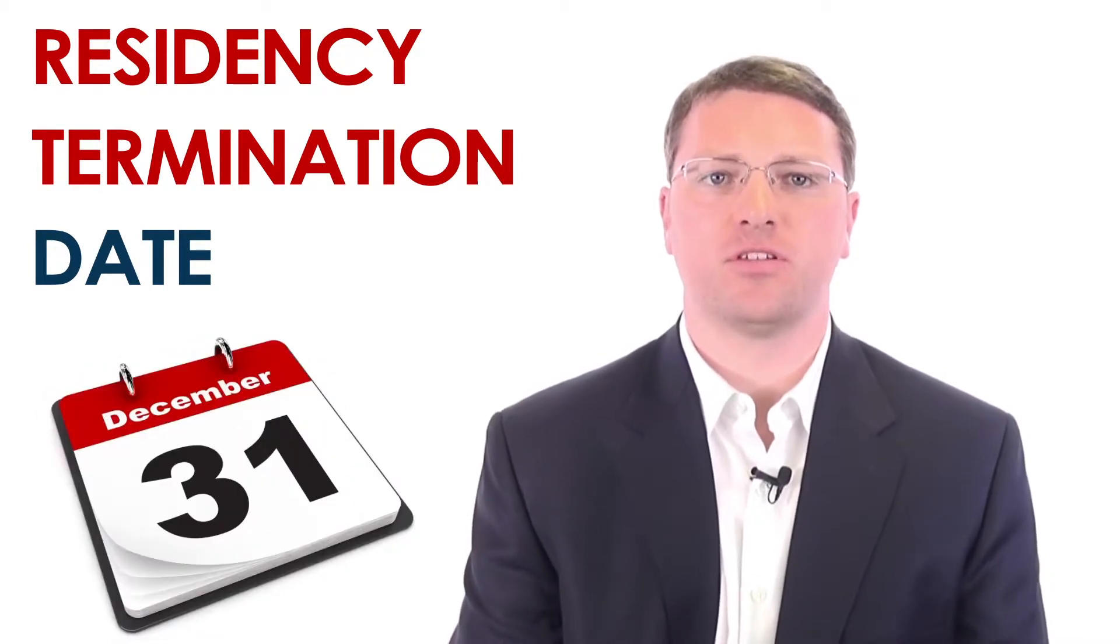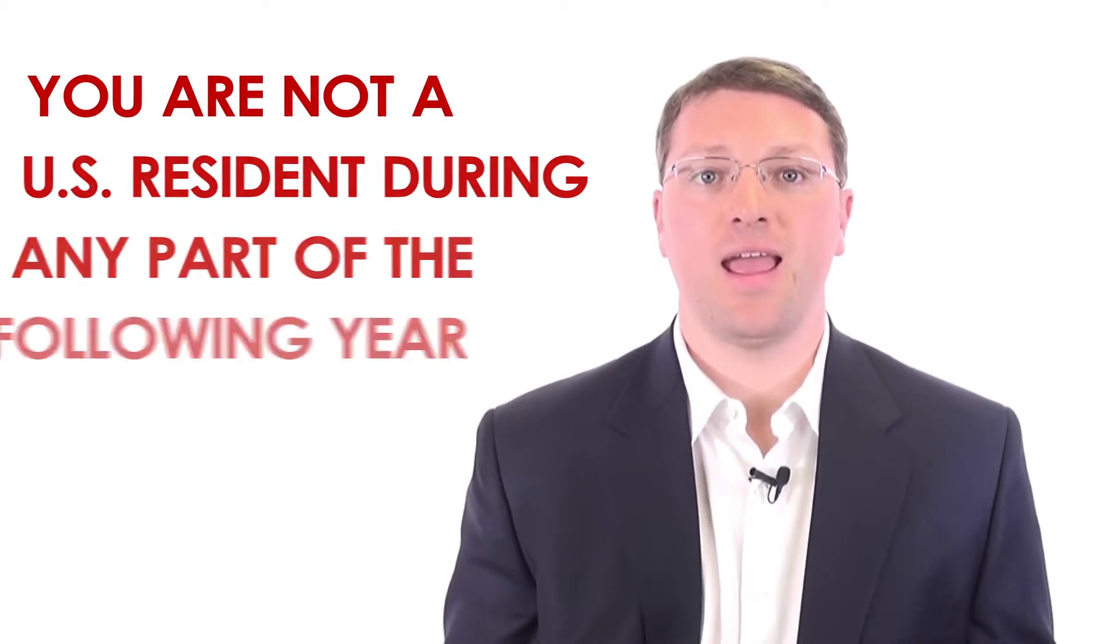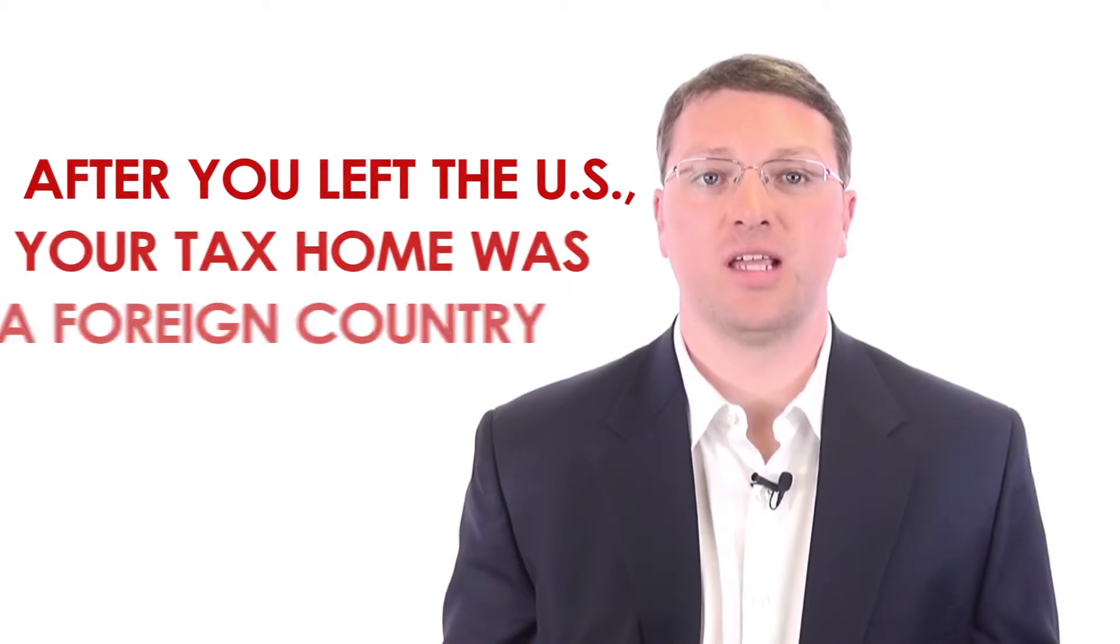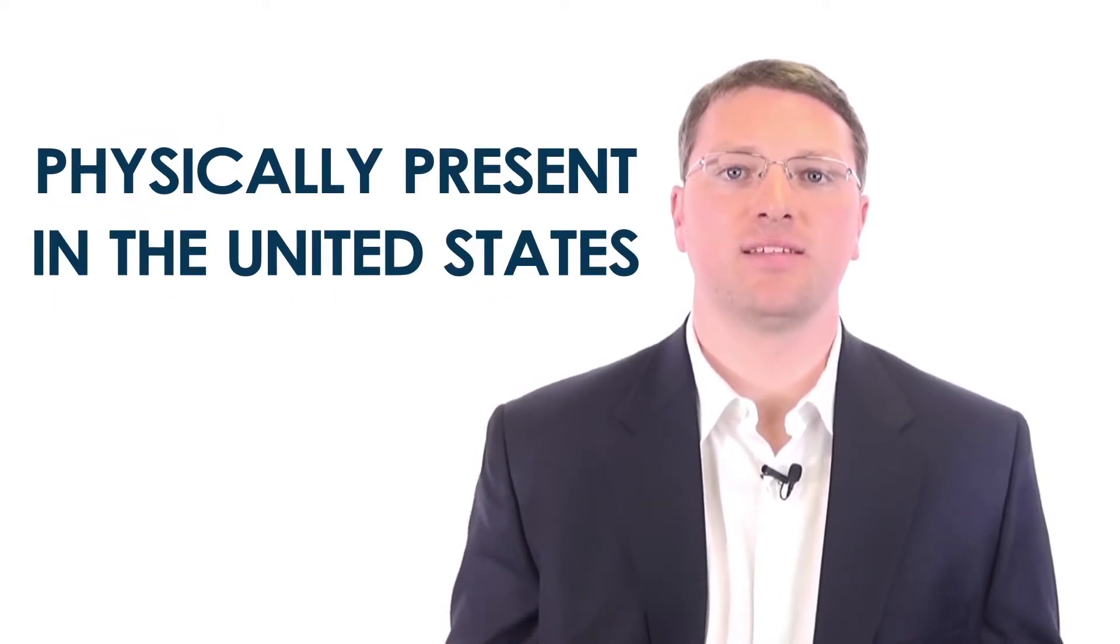When you leave the United States permanently during a year in which you qualify as a tax resident, but only if certain conditions apply. You might be a dual status alien if you permanently left the U.S. during the year. If you left the U.S. to re-establish your residence in your home country after you met the substantial presence test, your residency termination date is generally December 31st of the year you leave. You are therefore considered a U.S. resident for the entire calendar year. However, you can claim to be a dual status alien for the year you leave if you meet the following conditions. You are not a U.S. resident during any part of the following year and you establish that after you left the U.S. your tax home was a foreign country and you had a closer connection to that country.